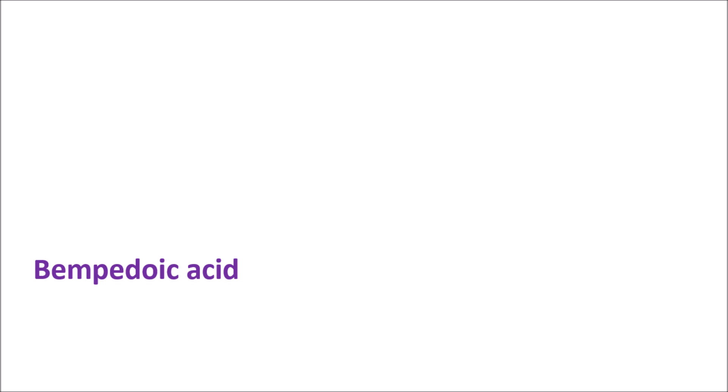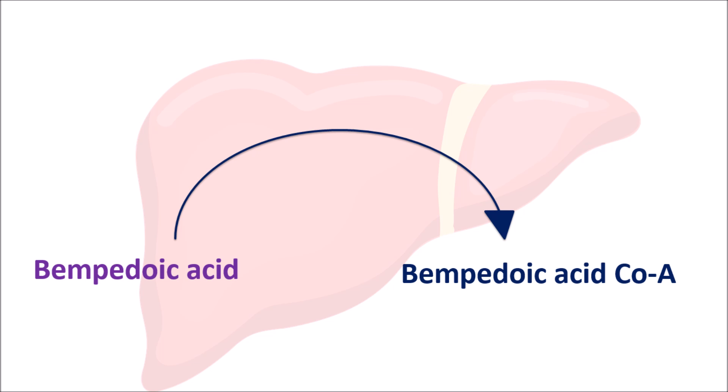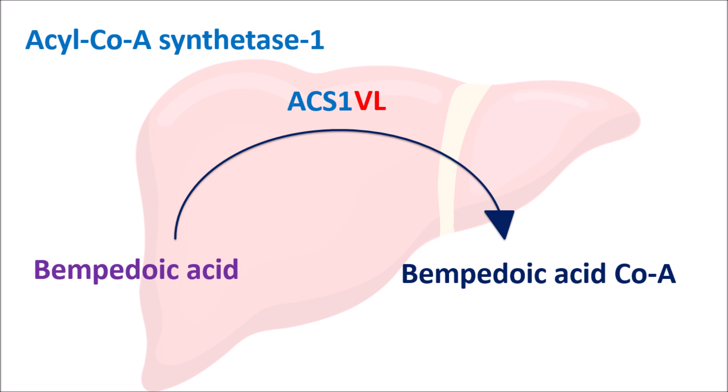Bempedoic acid needs activation within the liver. It is converted into Bempedoic acid-CoA by the enzyme ACSVL1 — Acyl-CoA Synthetase Very Long chain 1. This enzyme is highly expressed within the liver and attaches CoA to Bempedoic acid. This is the active form of the medication which can reduce cholesterol biosynthesis within the liver.